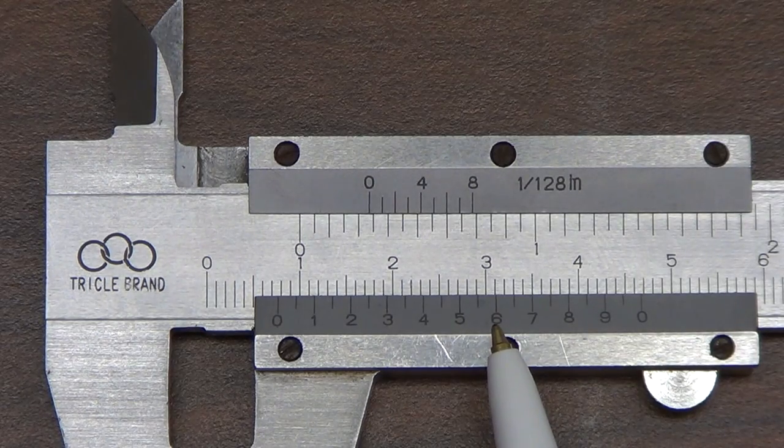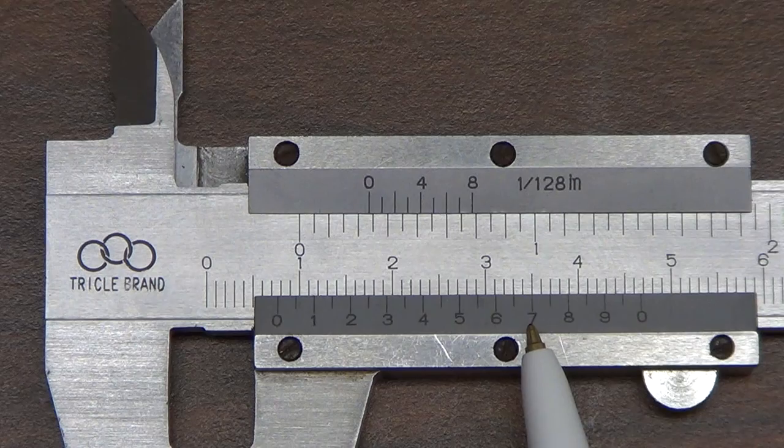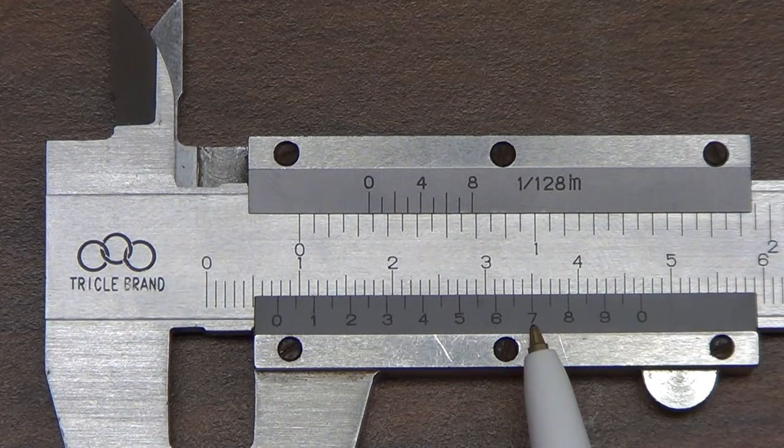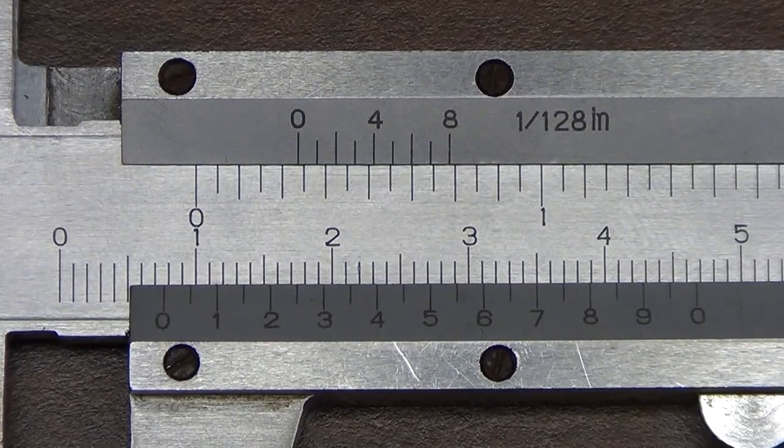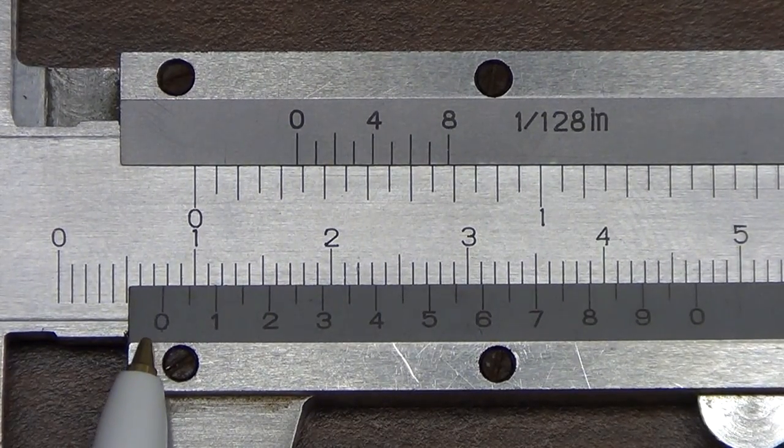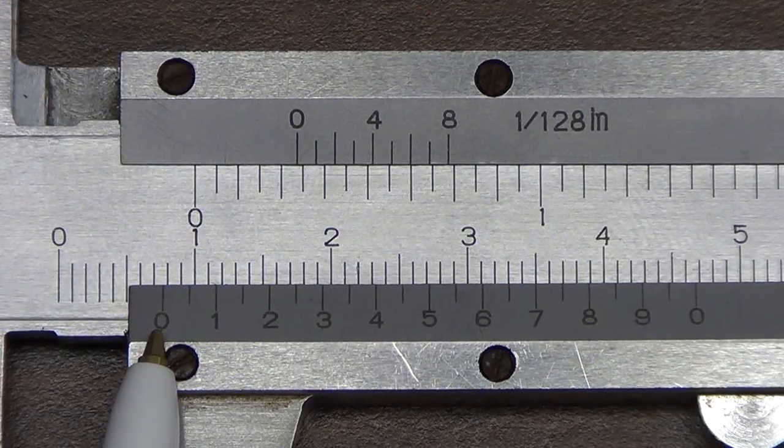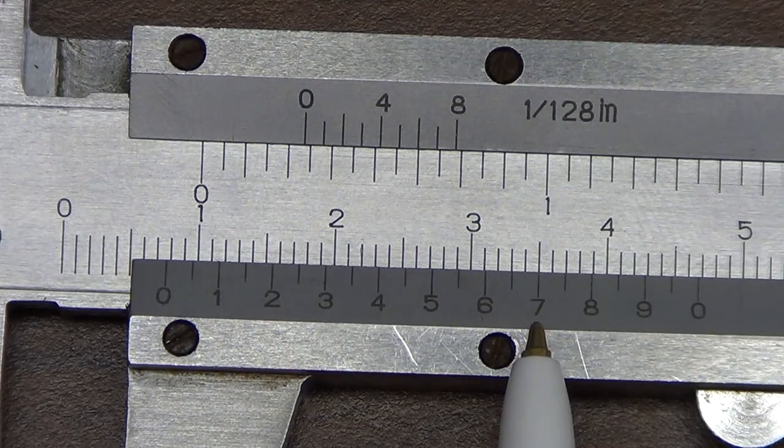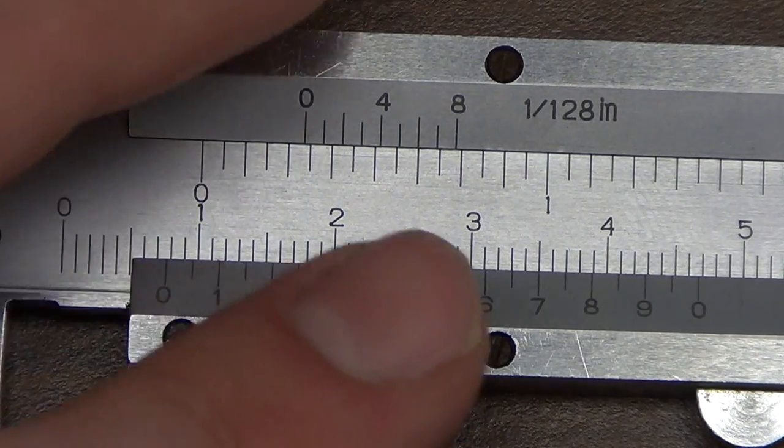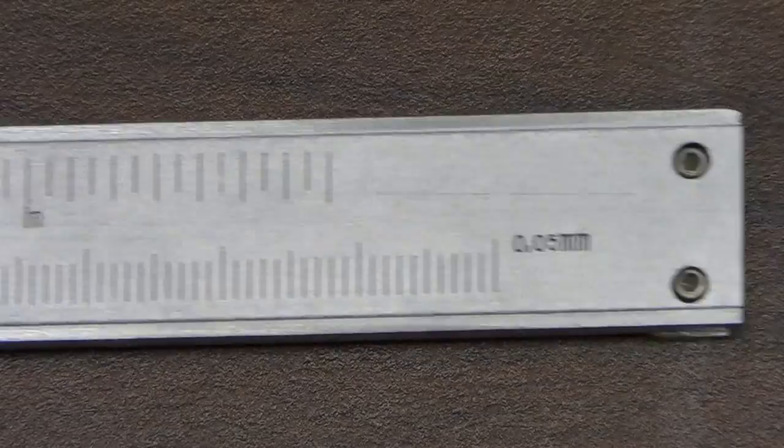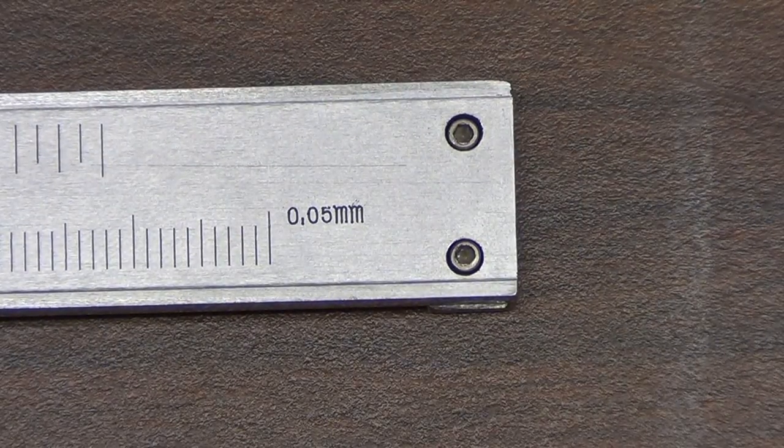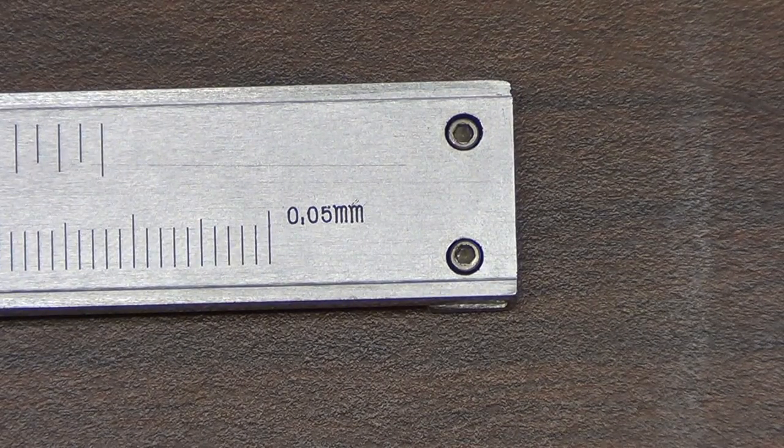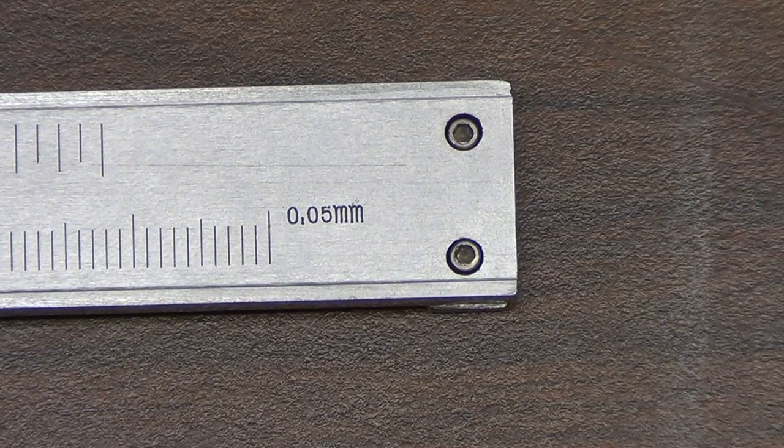So on the minor scale, the six mark lines up pretty well. You could even say the seven mark lines up better. So we'll take this seven as our minor scale measurement. Now the question is, how do we combine this 0.7 centimeter measurement on the major scale with the seven mark on the minor scale? The answer to that is over on the far side of our caliper, there's a little marking that says 0.05 millimeters.